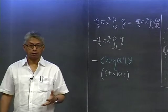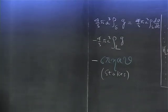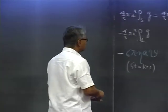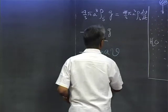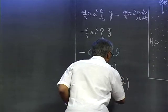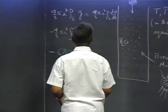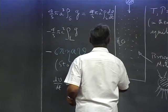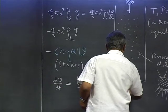Viscosity is like friction. If you try to roll a chalk piece on this table it will eventually come to a stop because there is friction between the chalk and the table. After doing a little algebra, you get dv/dt equal to [gravitational minus buoyancy terms] minus (9/2)(η/a²)v.